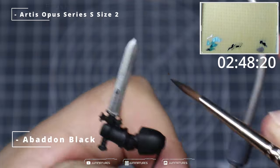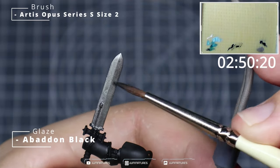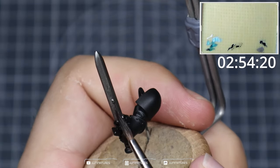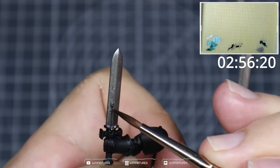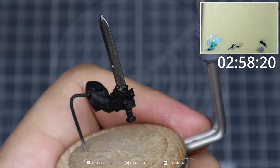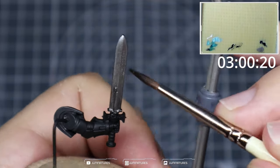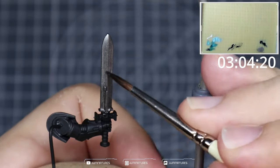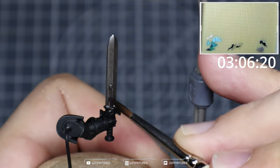Next we're going to grab some Abaddon Black and we're going to thin this down to a glaze consistency. We're going to push that from about halfway down the sword or halfway up the sword towards the darkest point. So anything that we do on the front we got to do on the back. Same again, just build this up over a number of passes.